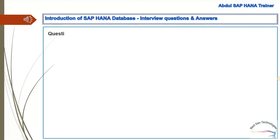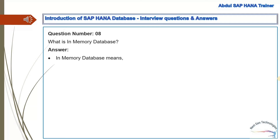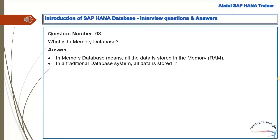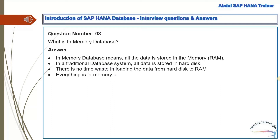Question 8: What is an in-memory database? Answer: In-memory database means all the data is stored in memory, whereas in a traditional database system all data is stored on hard disk. There is no time wasted loading data from hard disk to RAM. Everything is in memory all the time, which gives the CPU quick access to data for processing.